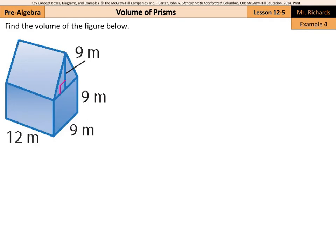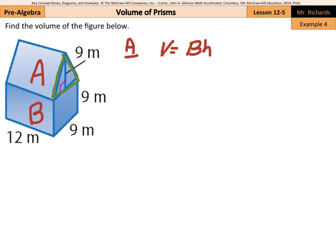Back in lesson 12.3, we found the area of composite figures. Now how does this work when we look to find the volume of a composite figure? Well, pretty much the same — we want to find the volume of the top prism and add it to the volume of the bottom prism. Well, our top prism is a triangular prism, and so volume is still going to equal the area of the base times the height. The base of our triangular prism has a height of 9 and a base length of 9. The height of the prism coming back here looks to be 12.